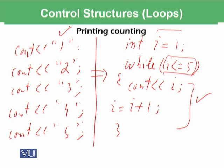Then the statement i is assigned i plus 1 executes. This is an assignment statement — it increments i by 1 and stores it back in i, so i becomes 2. The loop again checks the condition: 2 is less than or equal to 5, condition is true. Then it will cout i, so 2 will be displayed, and then i is assigned i plus 1, so i becomes 3.